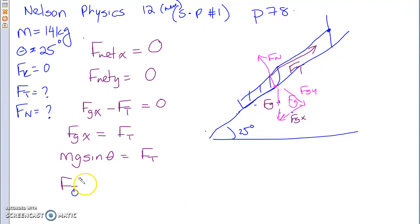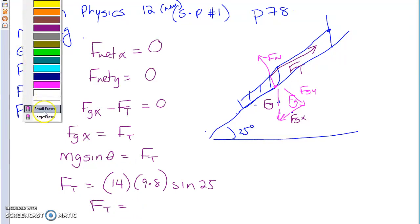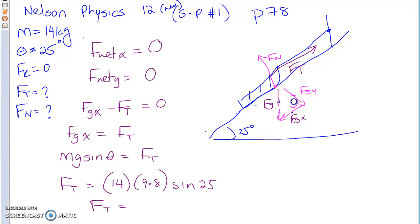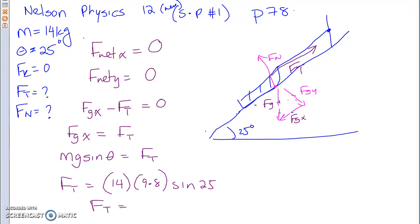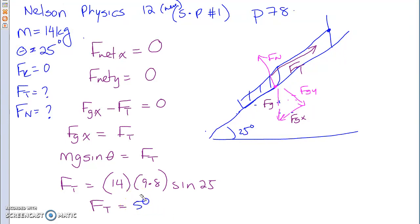Your FT is going to be 14 times 9.8 times sine of 25. What do you get for your FT? 57.98 newtons, so about 58 newtons. That's the tension in the string. Does that make sense?